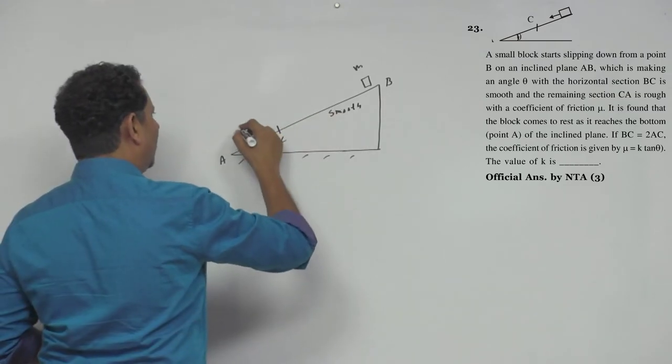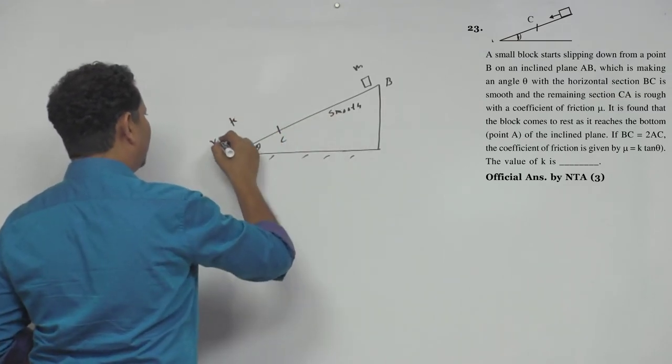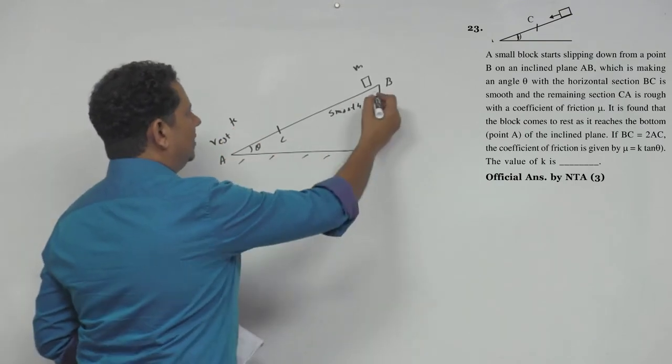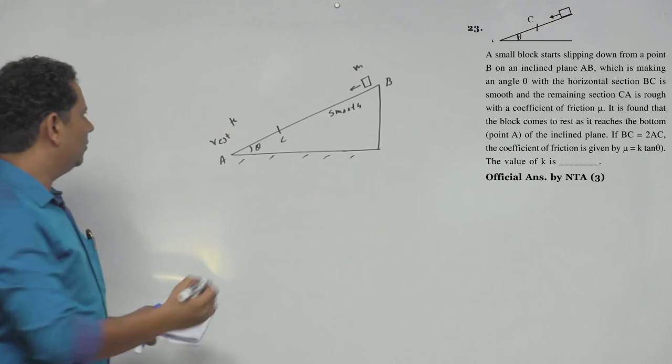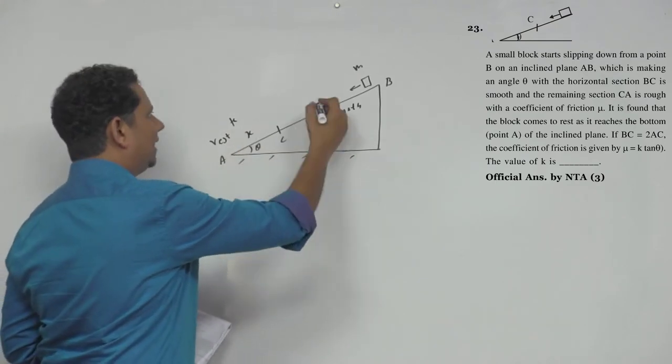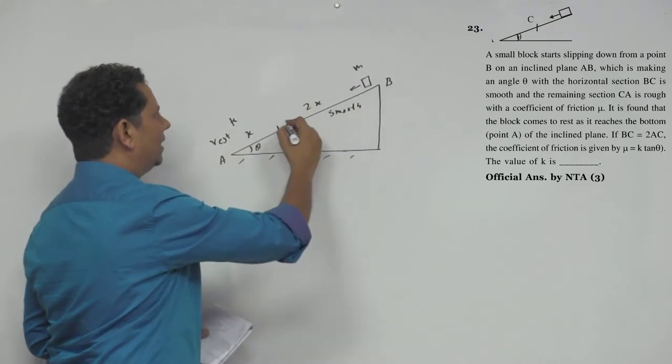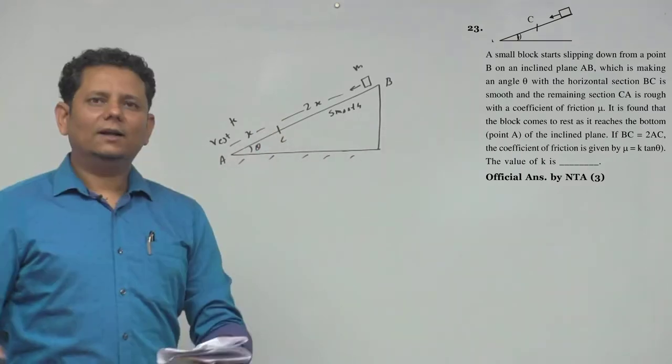You can see the length. So this length is 2x here to here, and this length is x. Now if you write the work energy theorem.